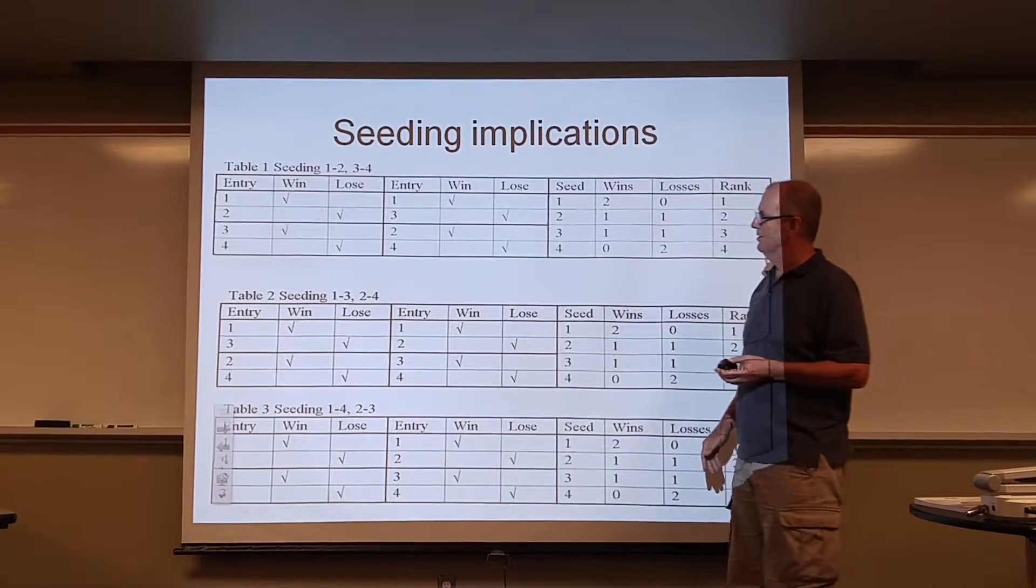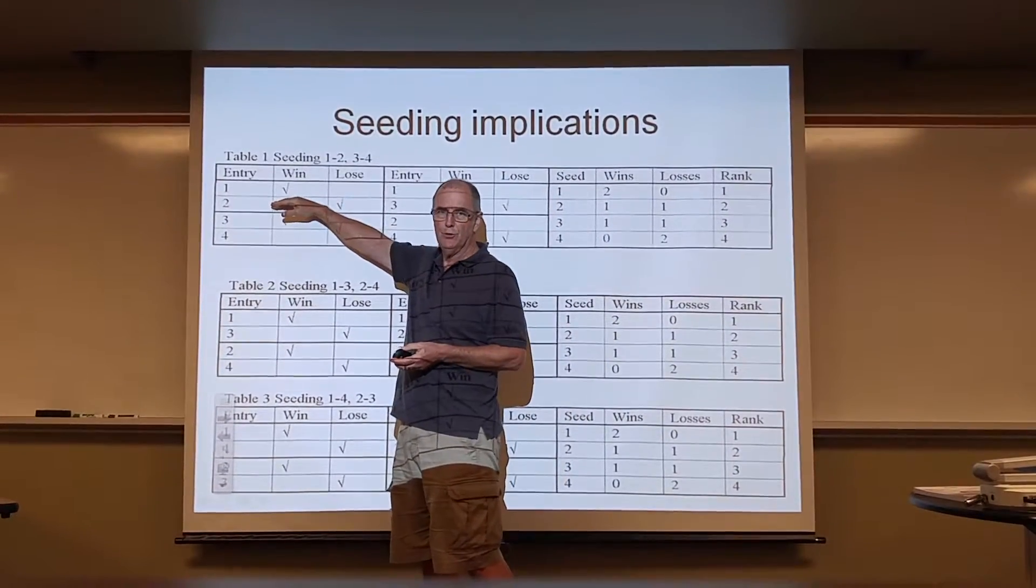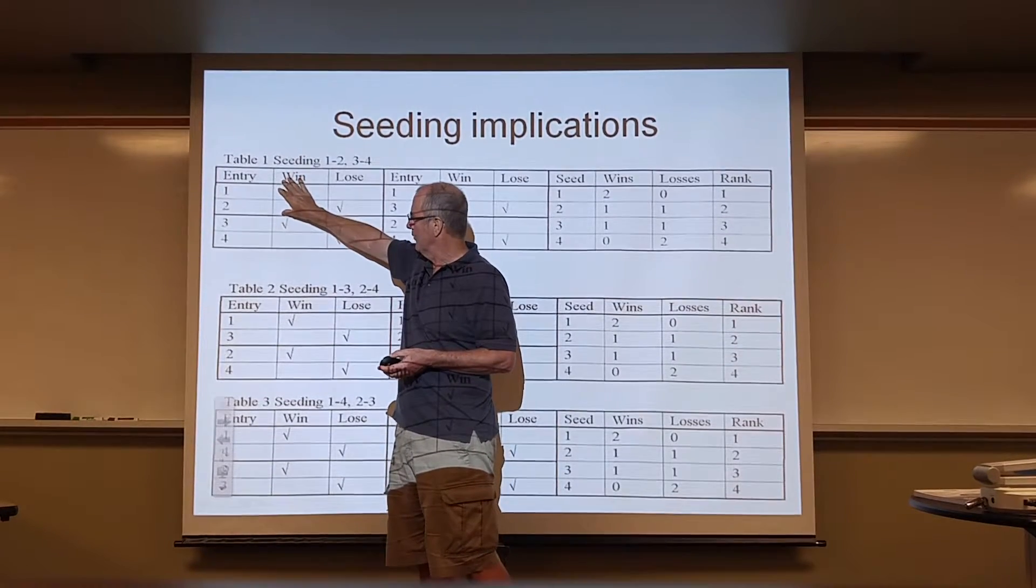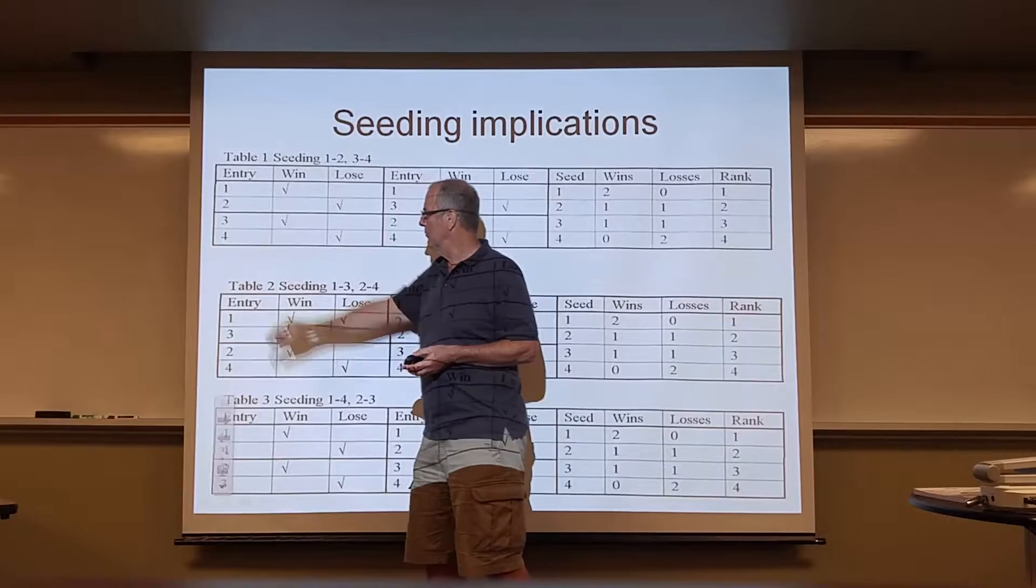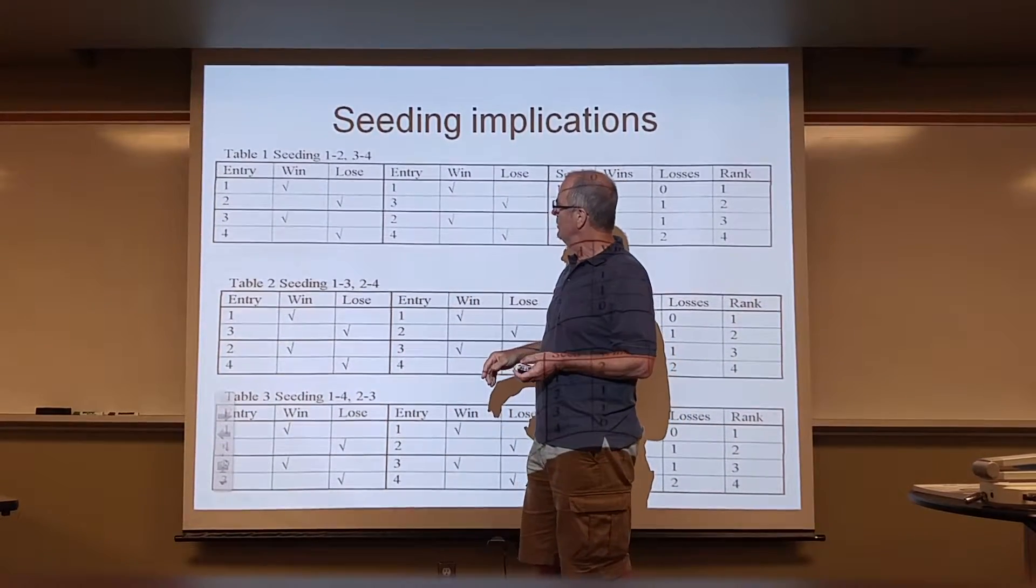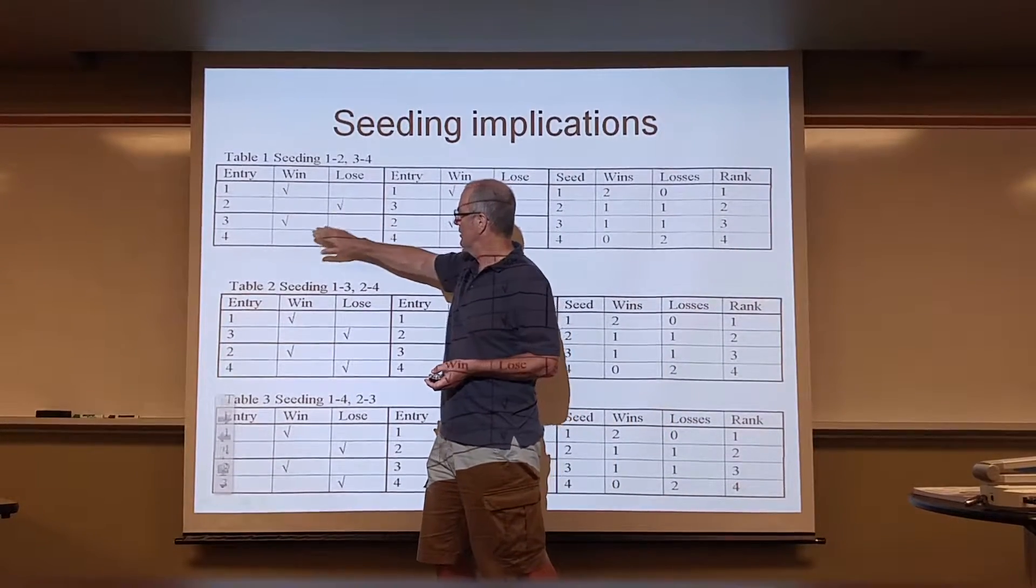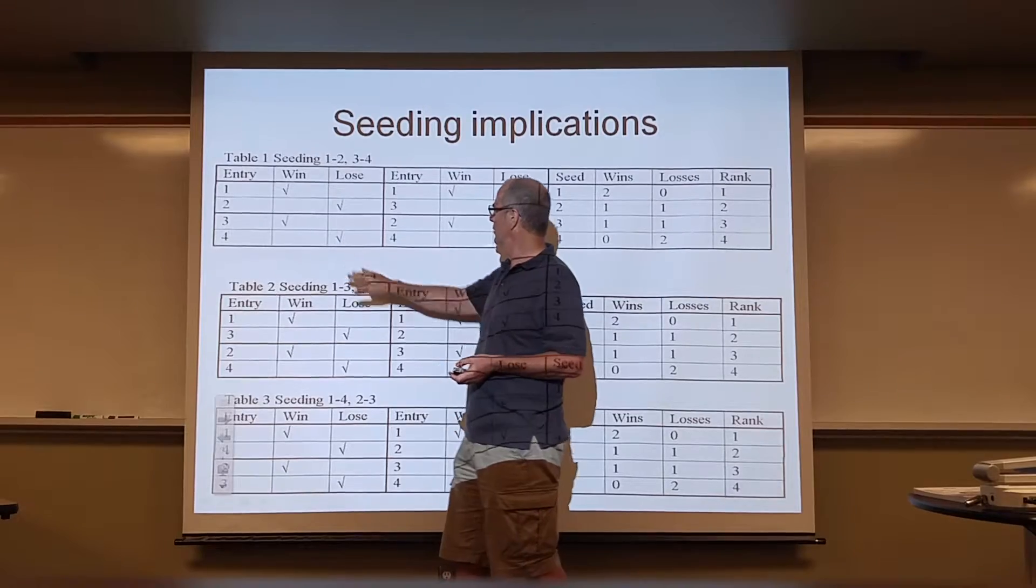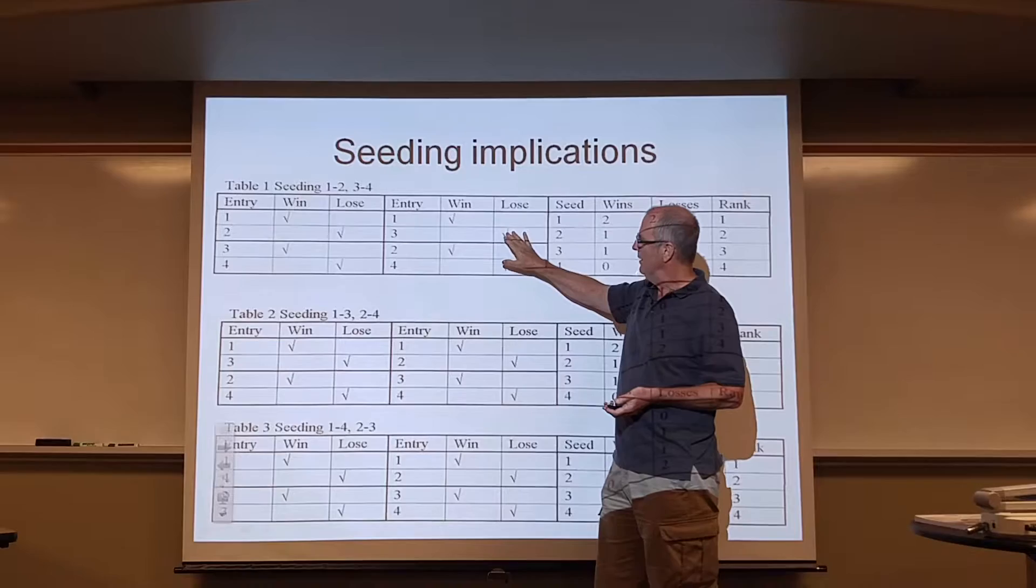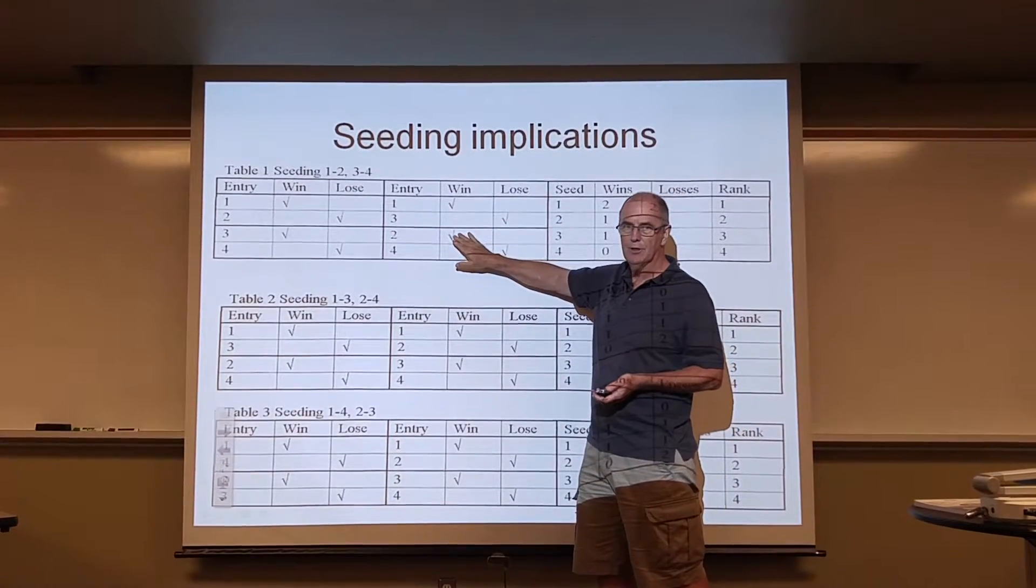Well, here's the seeding implications. Let's just say we seeded one and two in the one pool, or in the one playing each other in the first game, and three and four playing each other in that first round as well. So if one and two play, one would have won, and two would have lost. Three would have won, and four would have lost. In that next game, one would have beaten three, because the winners play, the losers play each other, and two would have won.